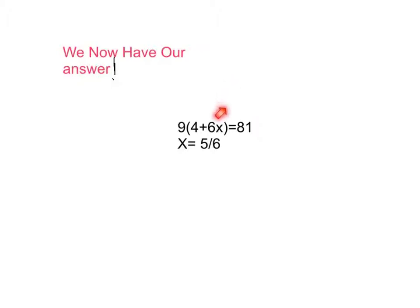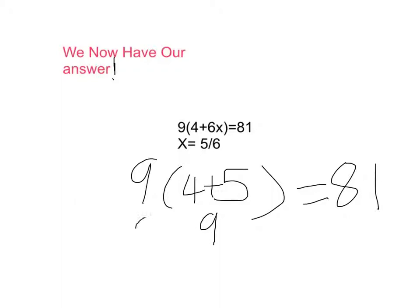And when we do so, you multiply 6 times 5 over 6, which will give us 5. And what we have left is 9 times 4 plus 5 equals 81. And 4 plus 5 equals 9. 9 times 9 equals 81. And that is true. 9 times 9 equals 81. So, we have found our answer, and we've checked that our answer is correct. So, we now have our answer.